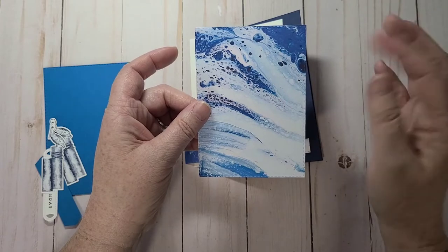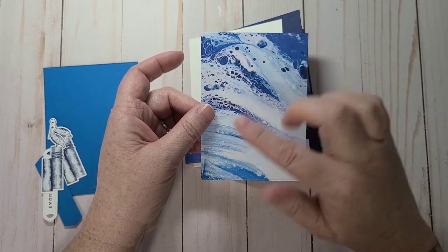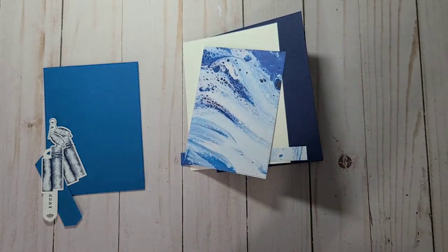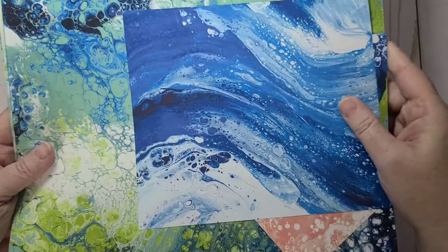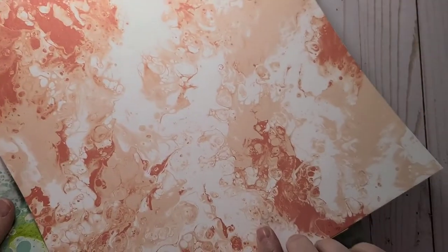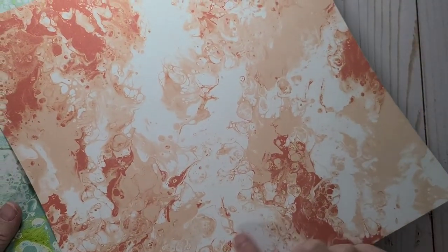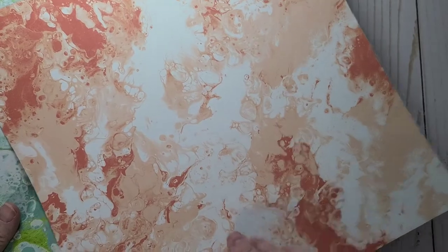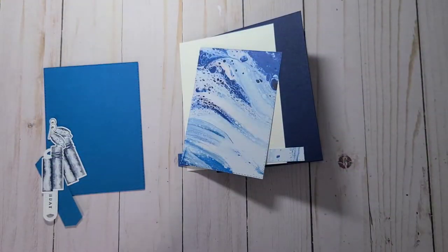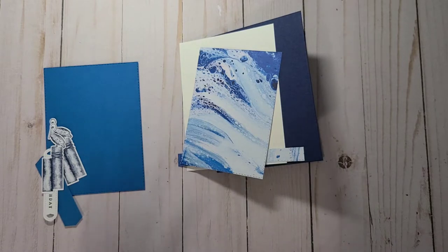This DSP is the Waves of the Ocean designer series paper. Last time I checked, it was still available in Canada, but it is going away. So if you want this paper, I highly recommend that you jump on and grab some. It's just different colors on both sides and they did the acrylic pour and took pictures of it. It's really cool, beautiful paper. I got two packs of it. I live near the ocean and my ocean themed cards, they always sell pretty well.